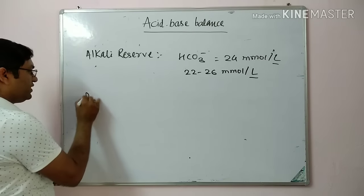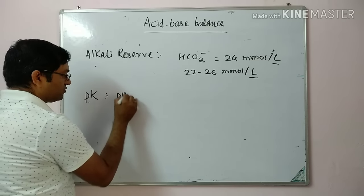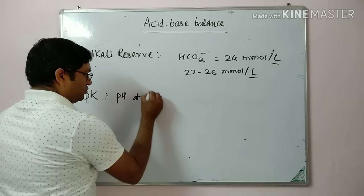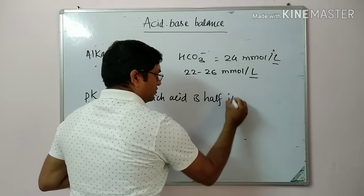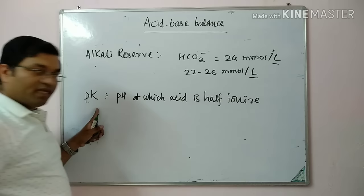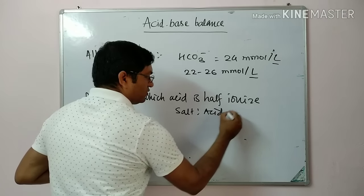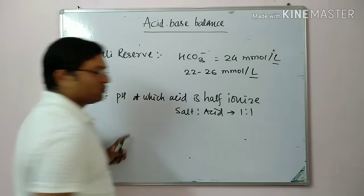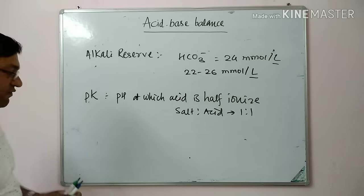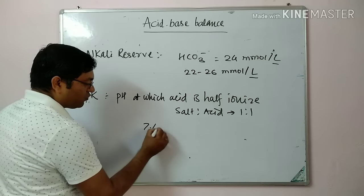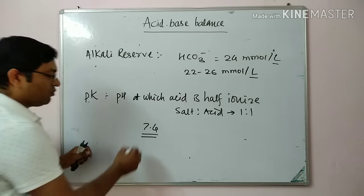The pK value is the pH at which the acid is half ionized. The salt-to-acid ratio is 1:1 at the pK value. If the pK value is nearer to the body pH of 7.4, the buffer is most effective.